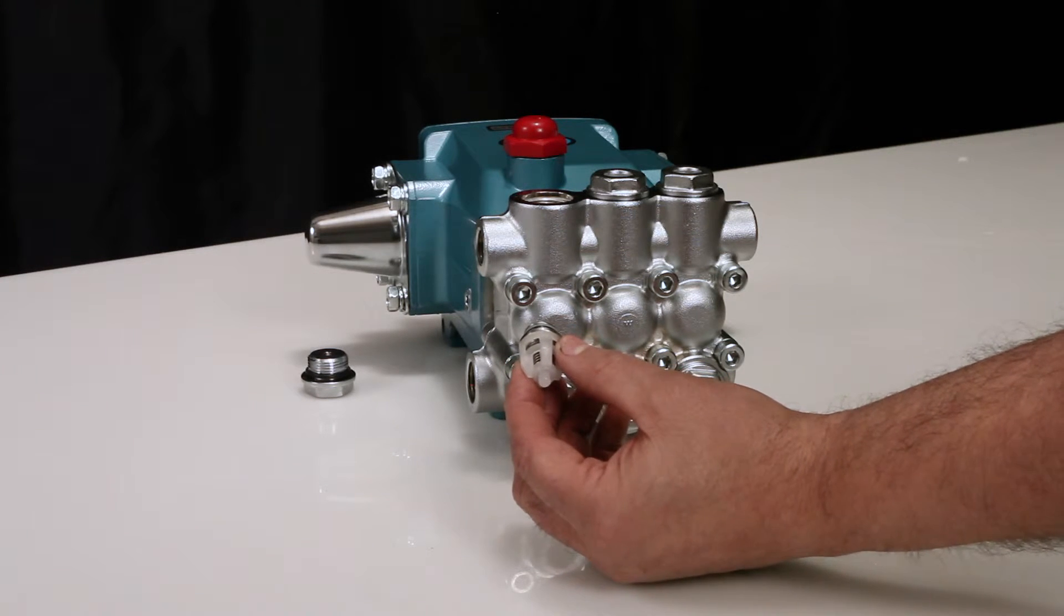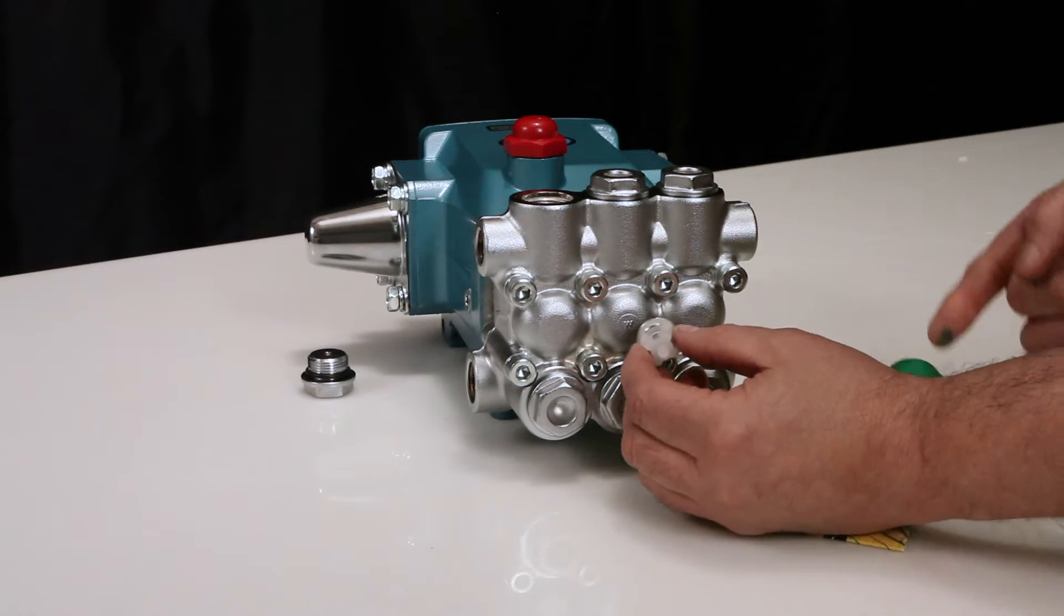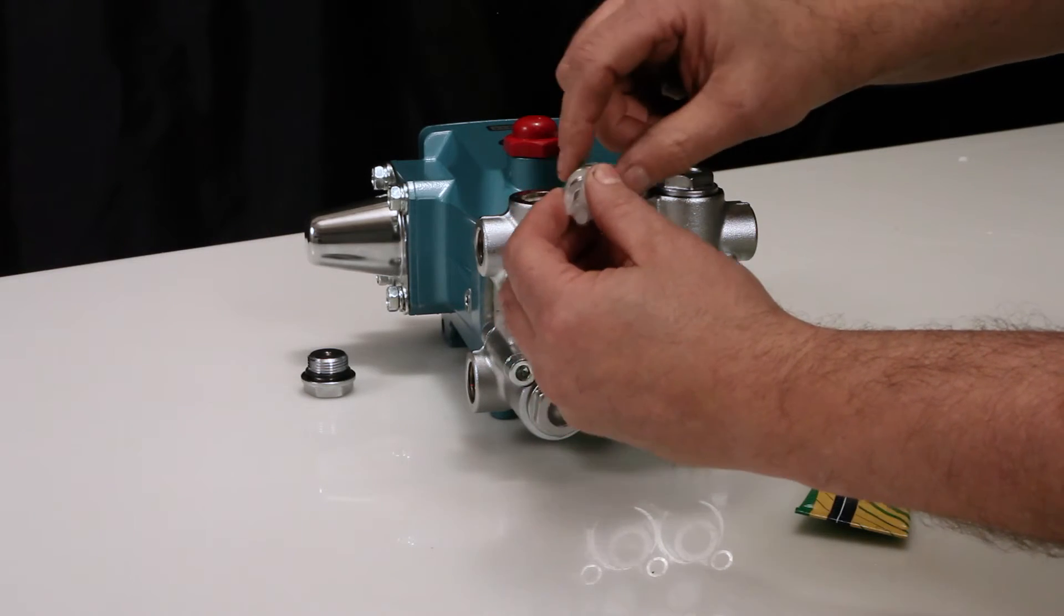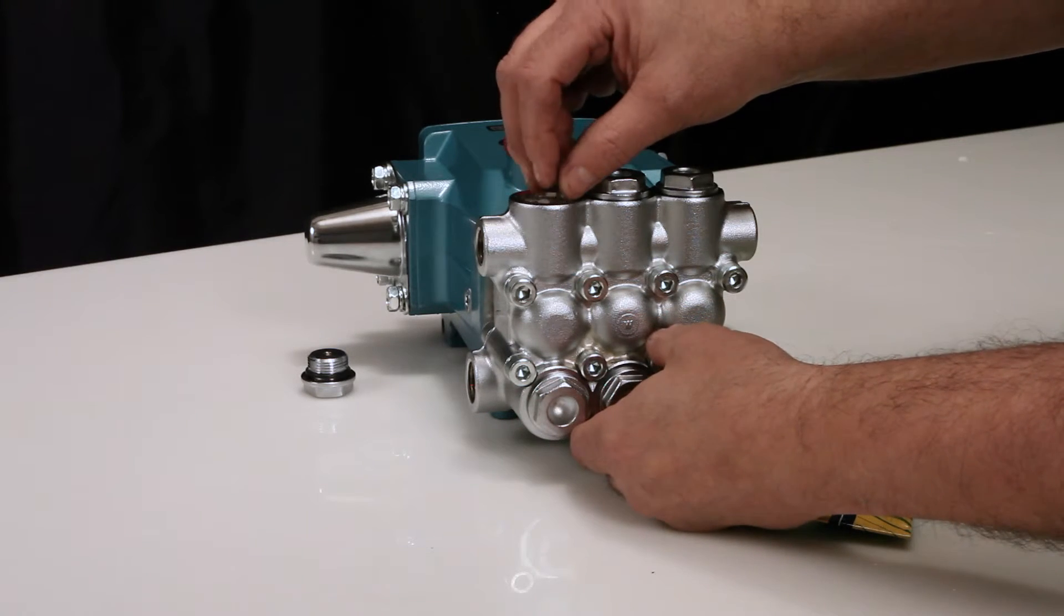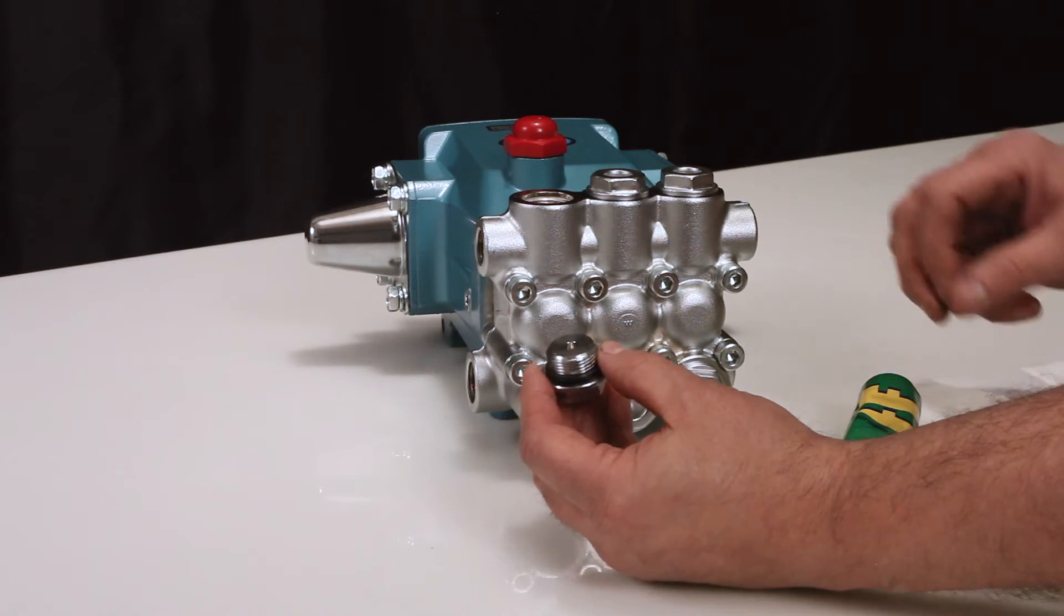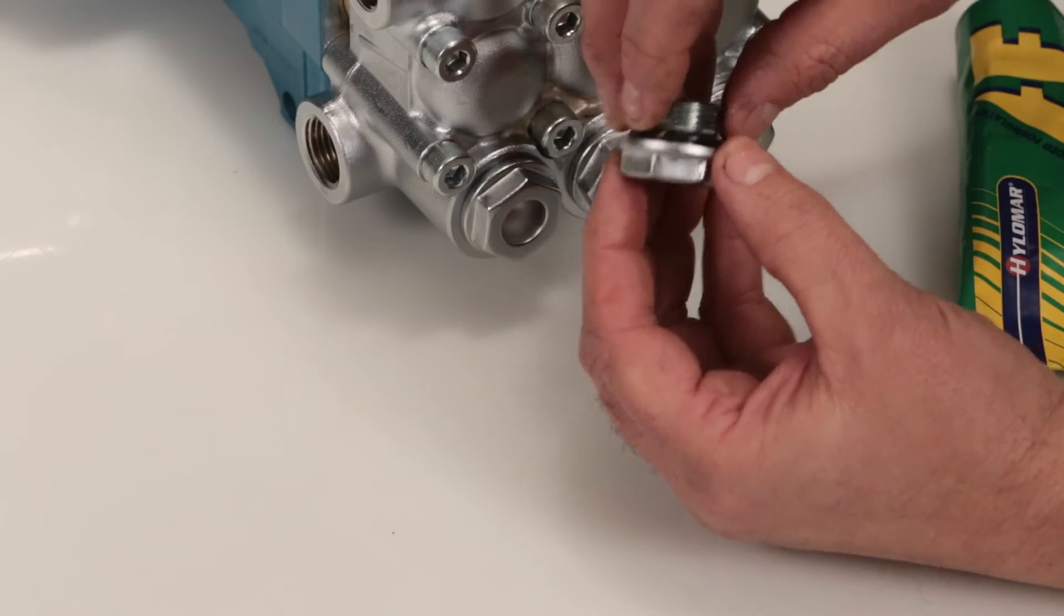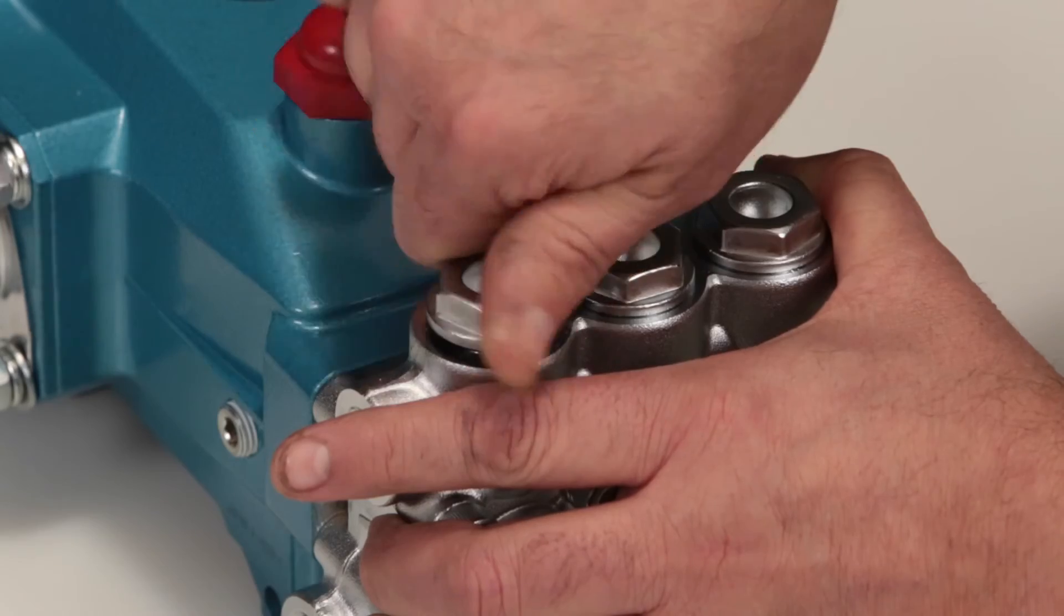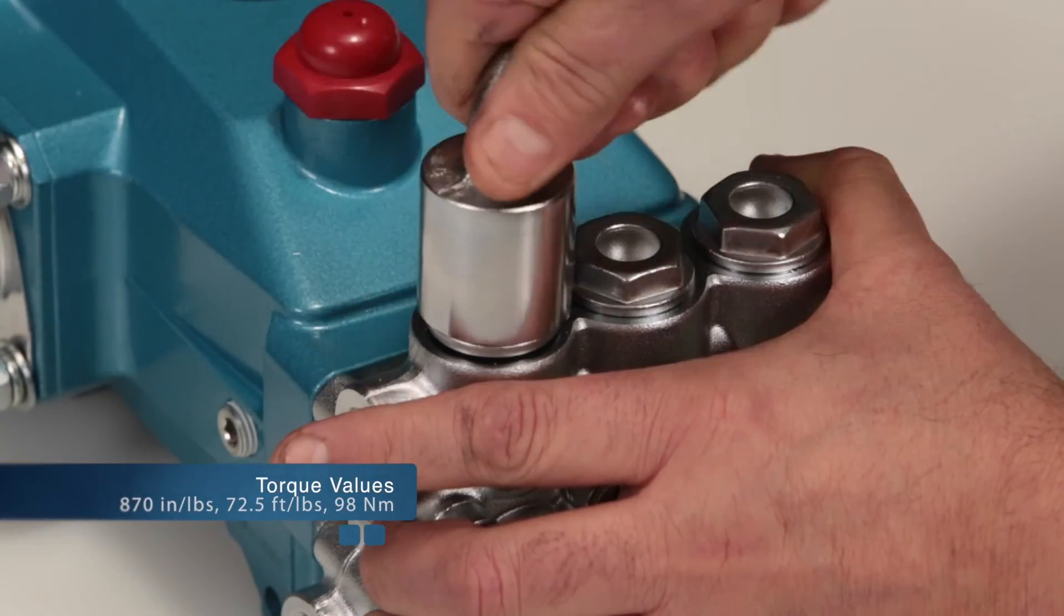Before reinstalling, lubricate O-ring and backup ring on valve assembly with liquid gasket. Next, insert valve assembly into manifold and press into place. Lubricate the O-ring and reinstall the valve plug. Torque to specification.